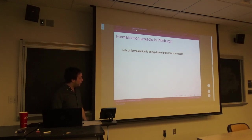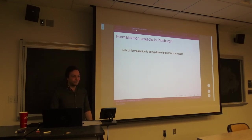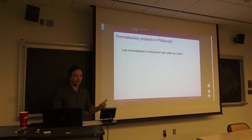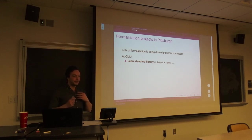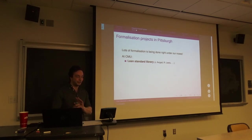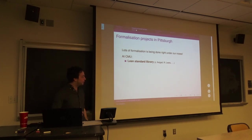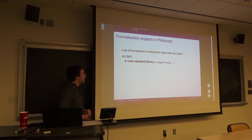There's a lot happening at CMU and at Pitt. Surprisingly, none of the work being done at CMU is in the mathematics department. The standard library of Lean — classical mathematics, number theory, combinatorics, algebra, topology — is being formalized in the philosophy department by, among others, Jeremy Avigad and Rob Lewis, who just got his PhD. The Lean standard library is being developed in the philosophy department, which is doing a lot of mathematics.